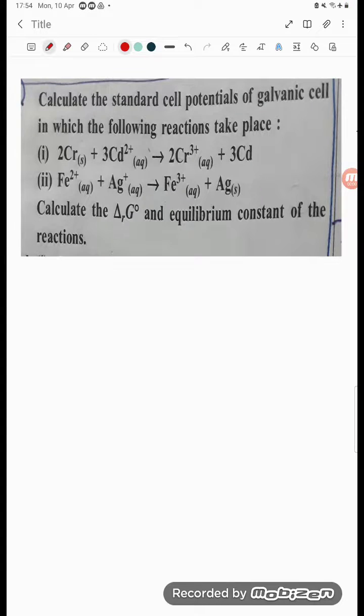Hello students, let's try to understand one more problem. The question is: calculate the cell potential of a galvanic cell in which the following reaction takes place. 2Cr + 3Cd²⁺ → 2Cr³⁺ + 3Cd. We got to know chromium and cadmium.